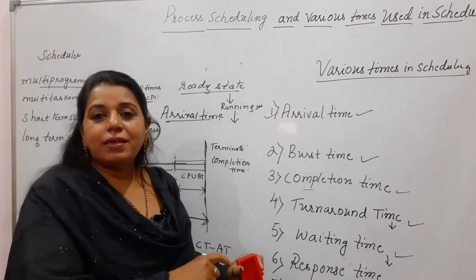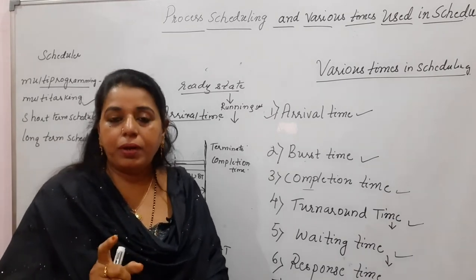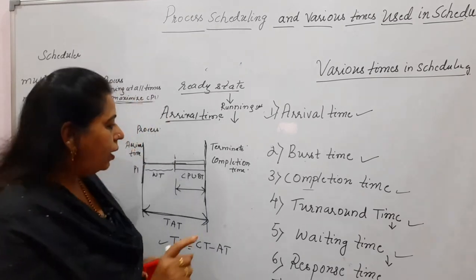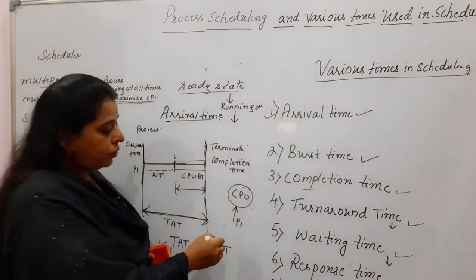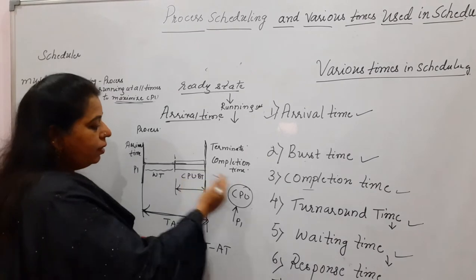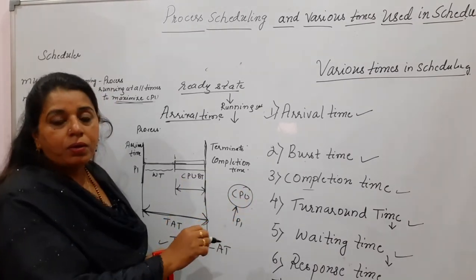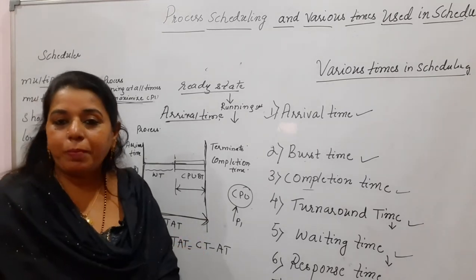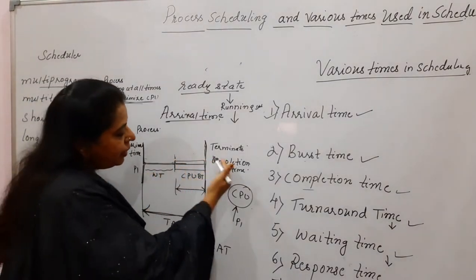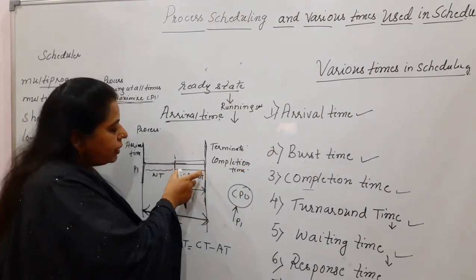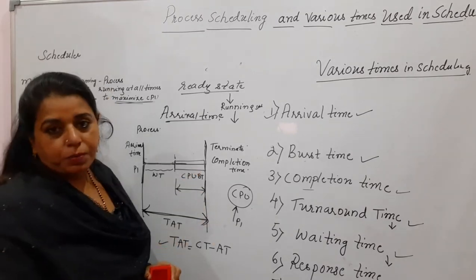In non-preemptive scheduling, once the process is allocated to the CPU for execution it will complete its job and then be deallocated. Once assigned, you allow the process to complete its job. Once the process gets the CPU it will complete its job and leave the system — that is the response time.